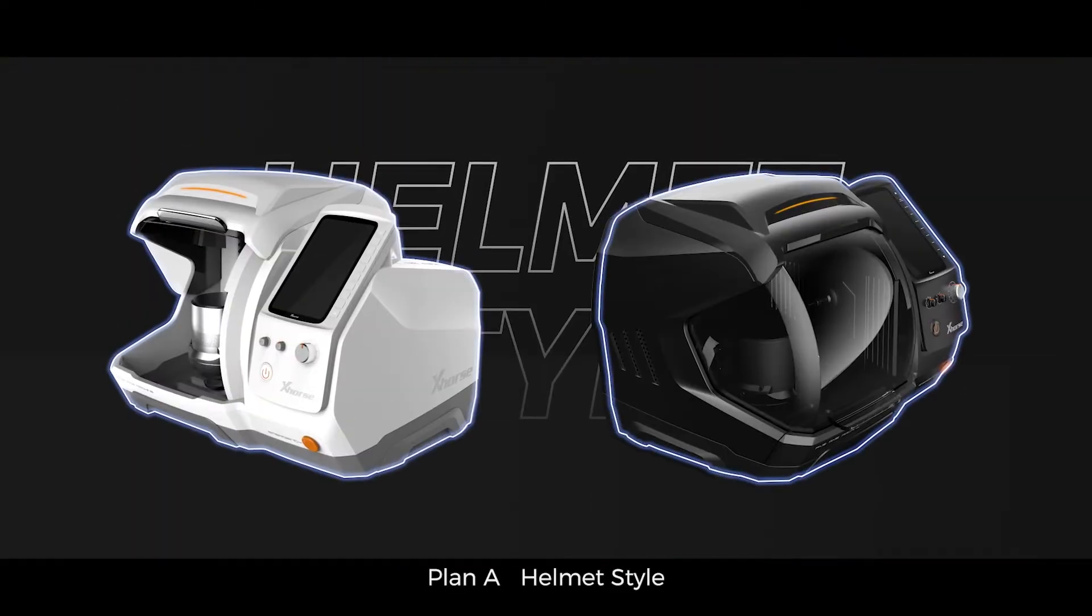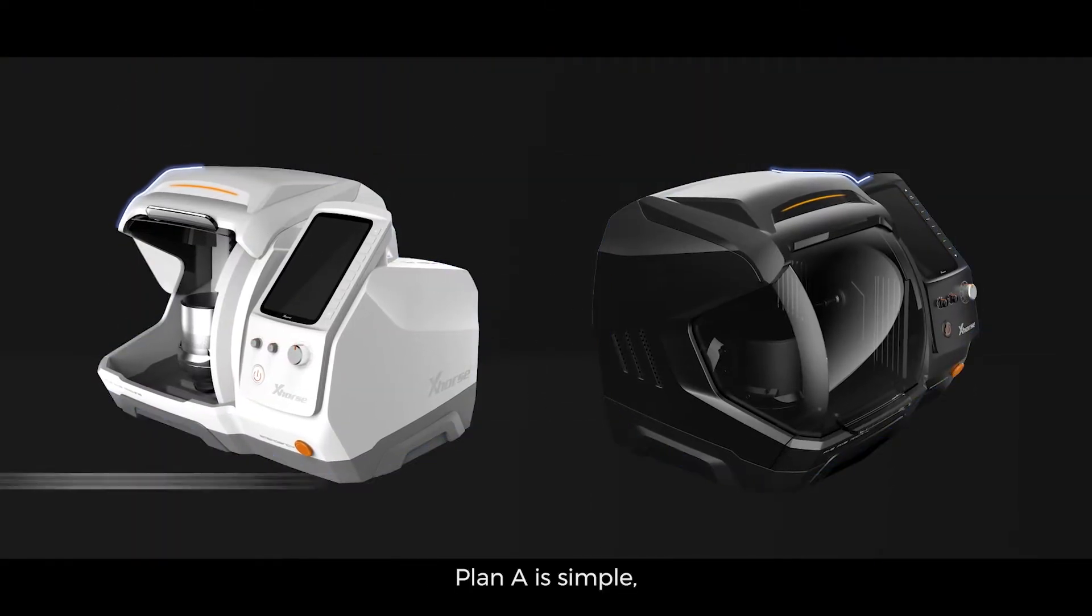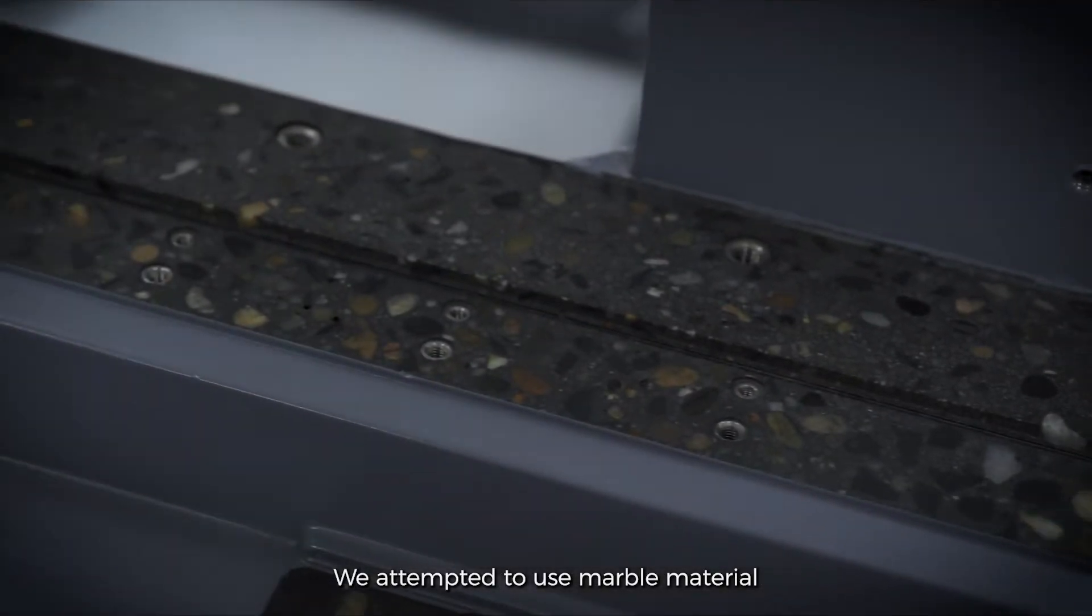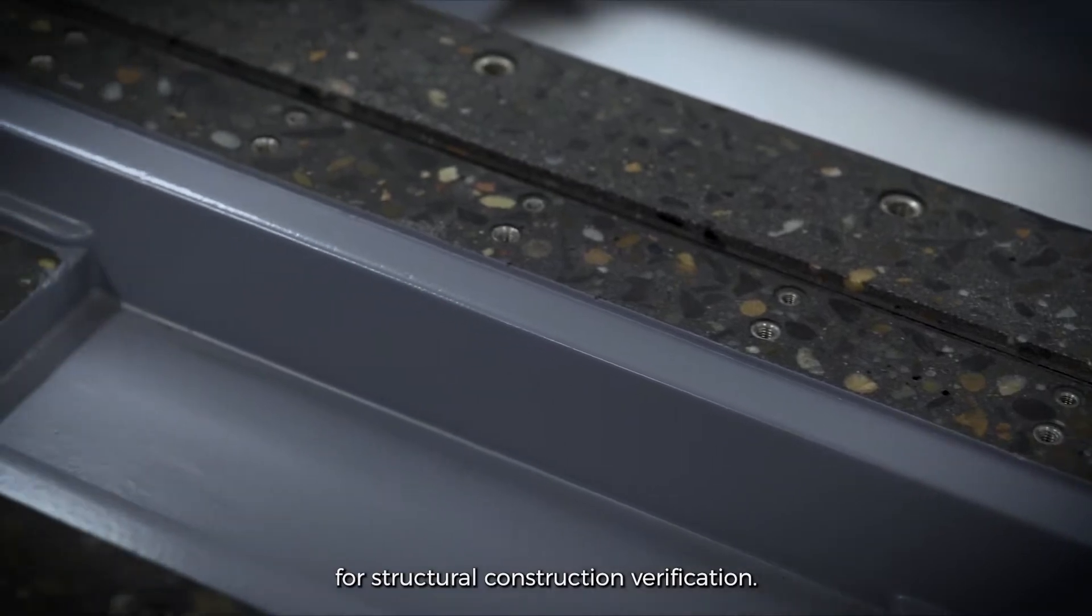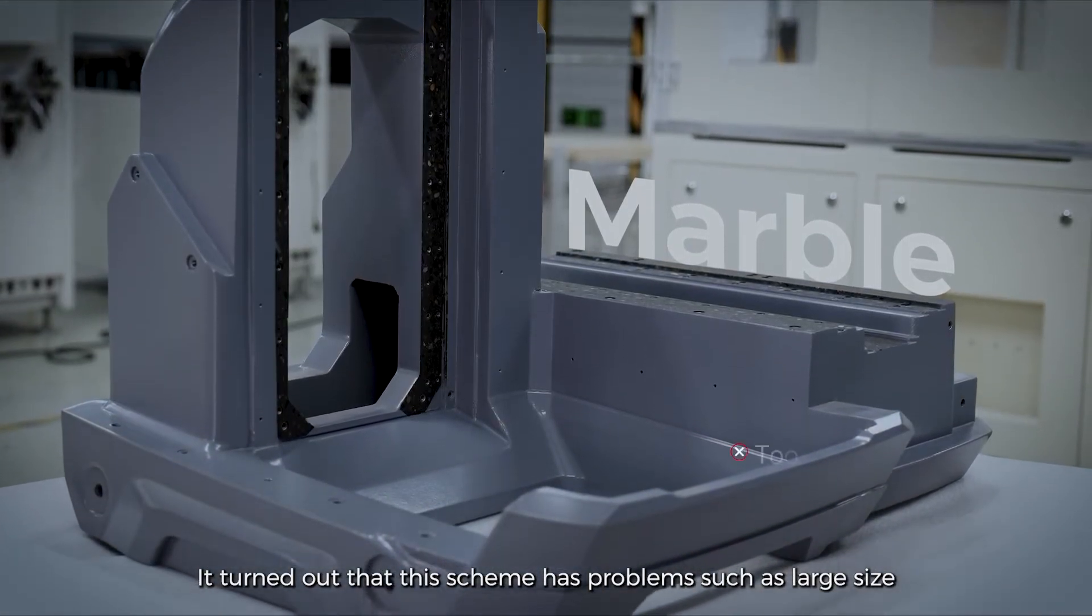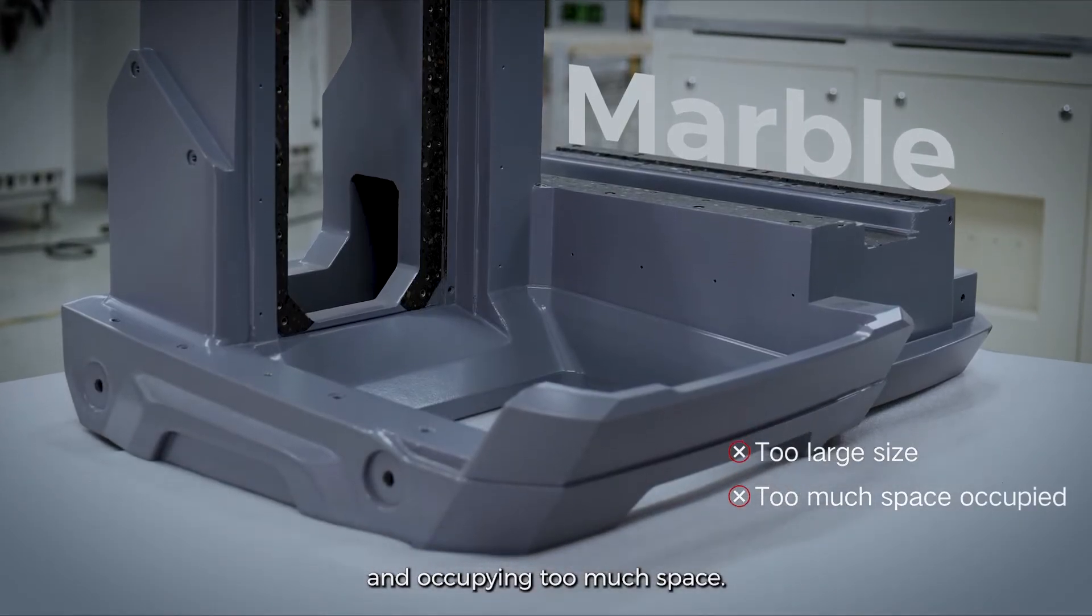Plan A, Helmet Style. Plan A is simple, modern, and has excellent ceiling performance. We attempted to use marble material for structural construction verification. It turned out that this scheme has problems such as large size and occupying too much space.